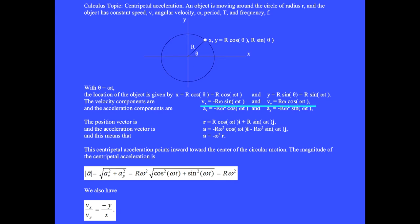We have v sub x equals minus r omega sine omega t because the derivative of the cosine is a minus sine and the derivative of the inside brings an omega outside.